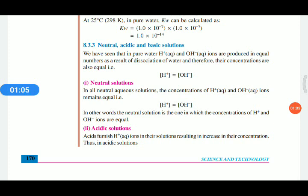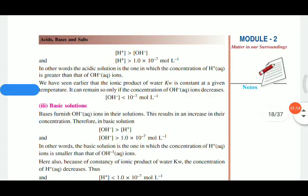But in the case of acidic solution, the concentration of H plus ions is greater than OH minus ions. Acid produces more H plus ions. That means the concentration of H plus ions is greater than OH minus ions.